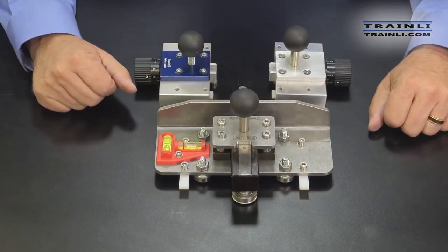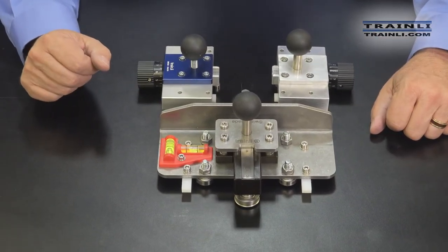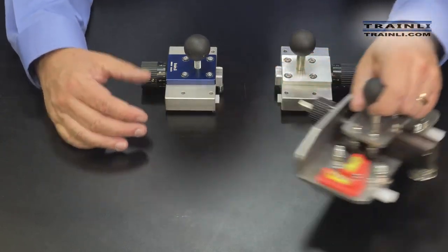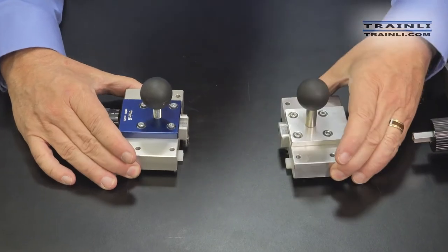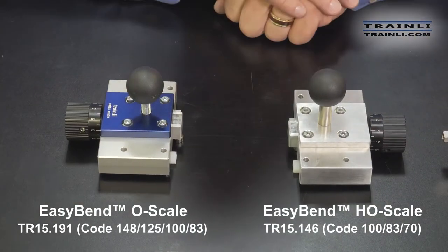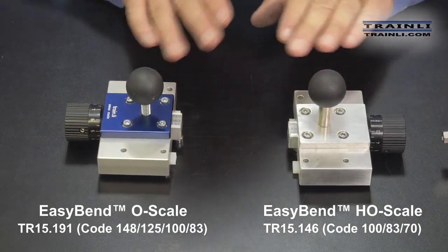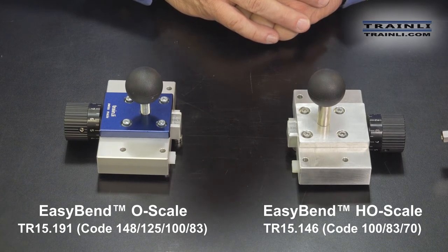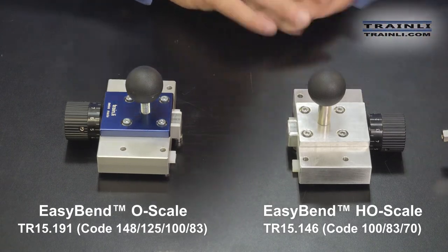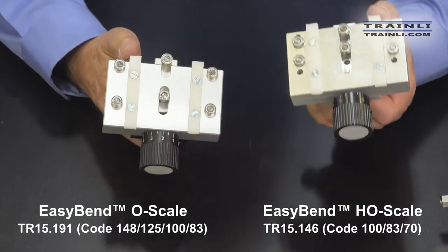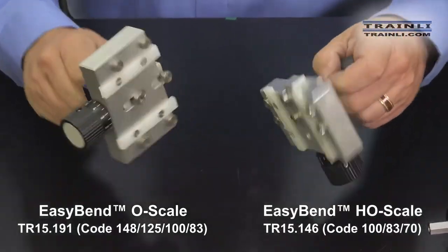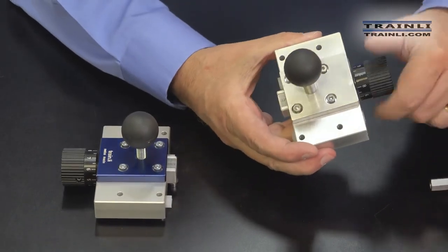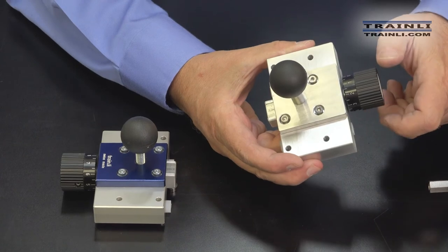So we sell these dual rail benders in different gauges. So this is the G gauge rail bender and we have the O and HO. So no matter what scale you're modeling in, you can go ahead and use these rail benders on your flex track. And they work exactly the same way as the G gauge one. They have the rollers, the Teflon bars, and the numerical scale so that you can keep track of your radiuses for your turns.